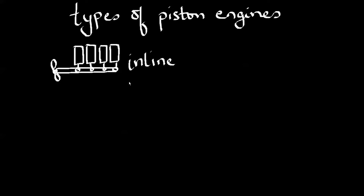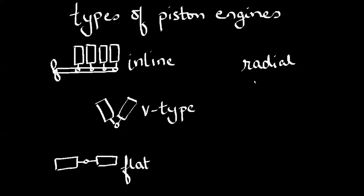So you have inline, in which all the cylinders are inline; V-type, in a V; flat, which is horizontally opposed; and radial, in which case the cylinders are arranged in a neat circle. There are other types—rotary, H, X, and U—but these are mostly variants of these four major types.